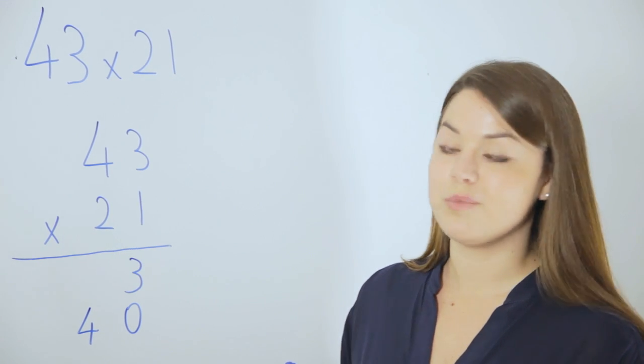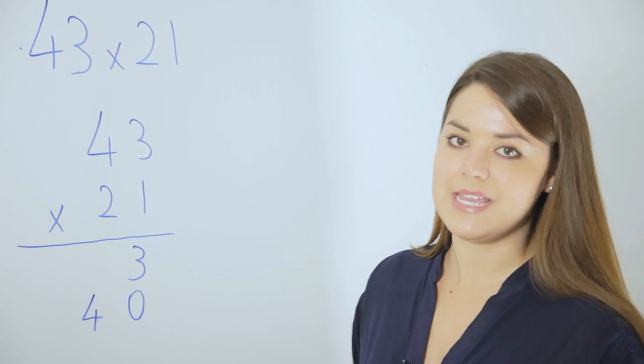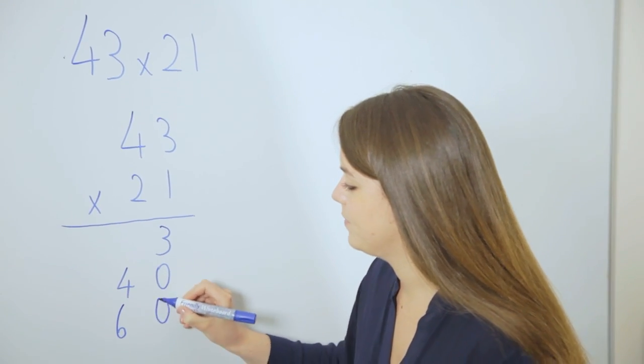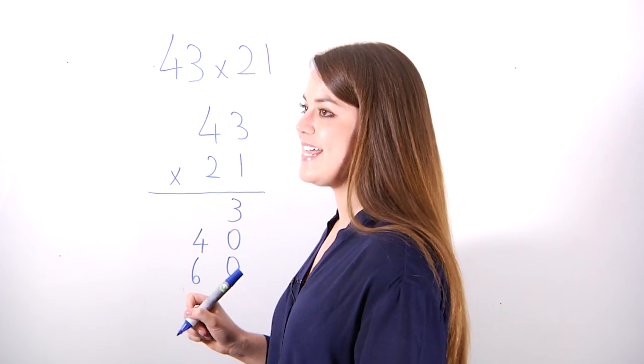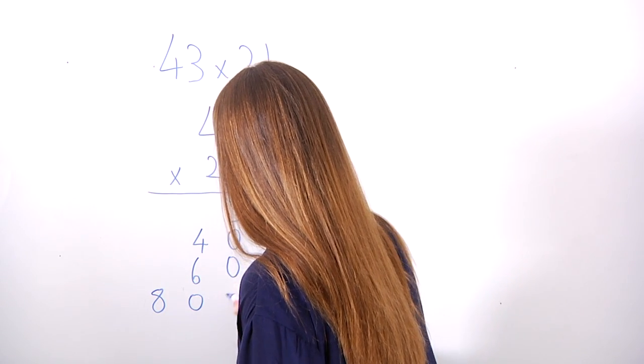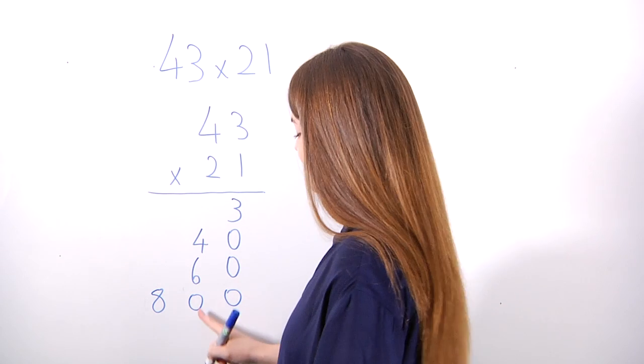We then move on to multiplying by 20. 20 times 3 is 60 and we place it beneath again. 20 times 40 is 800 and we place it at the bottom beneath the hundreds, tens and units.